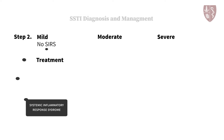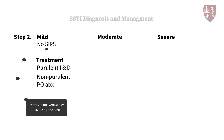Purulent SSTIs can be treated with I&D alone, while patients with non-purulent SSTIs can be treated with empiric oral antibiotics effective against the common pathogens, namely group A streptococcus plus or minus methicillin-sensitive staph aureus.